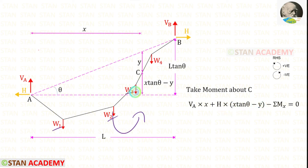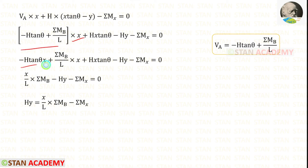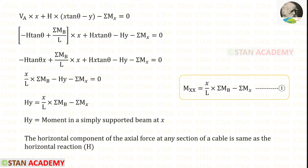Let us keep this point as C. Now let us take moment about C. Va is acting in the clockwise direction so that it will be positive and the distance is X. The horizontal thrust H is acting at a distance of X tan theta minus Y. These 3 loads are acting in the anticlockwise direction. Let us keep the summation of the moments sigma Mx. Since the loads are acting in the anticlockwise direction, it will be negative. For Va, we can apply this expression that we have derived just before. Let us multiply this with X. When we do that, we will get this. Then we can eliminate these two terms. We can take minus Hy to the other side, so it will come as positive. In the simply supported beam, we have derived this and kept this equation as number 1. So this term is equal to the moment in a simply supported beam at X.